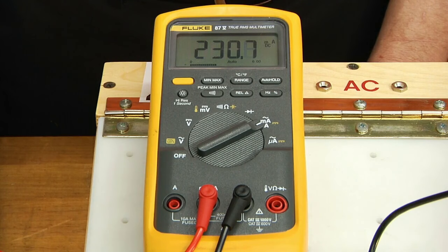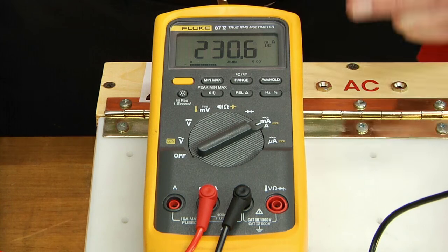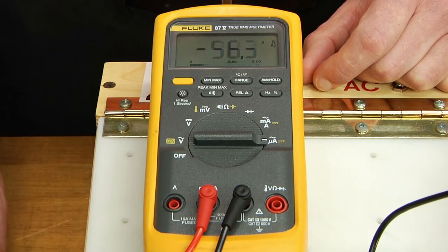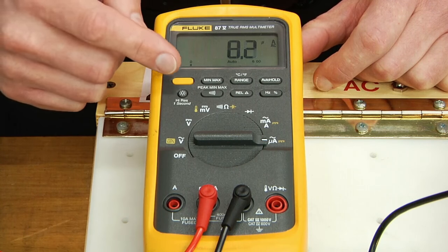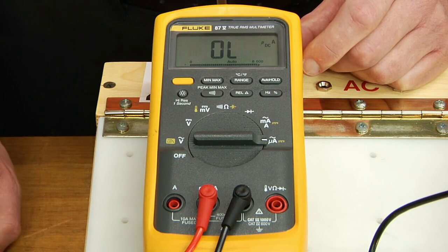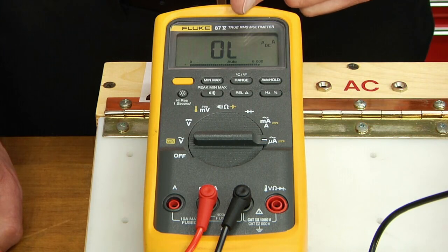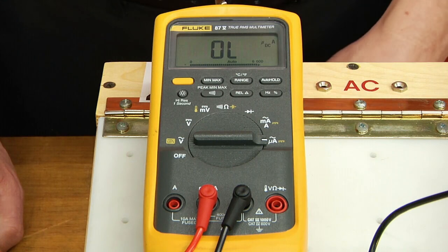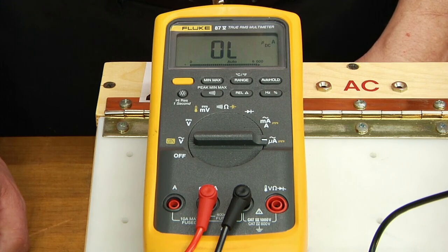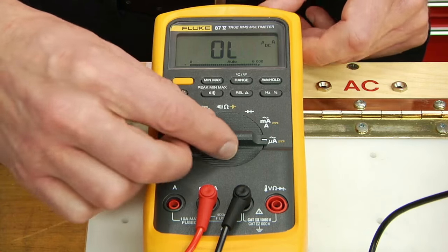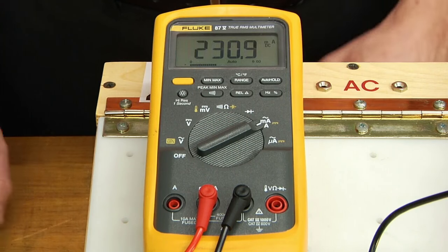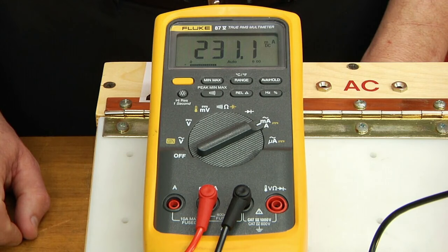For amperage readings below 1 milliamp, you can use the microamp setting on the meter. Simply turn the knob to the microamp setting. You will probably also need to change your function from AC back to DC, and then you can read microamps. As you can see, our meter is displaying OL, or out of limits, which means we are currently reading more than 1 milliamp. Because of that, we know that we need to switch our dial back to milliamps, change our function back to DC to properly read this circuit.